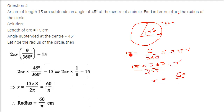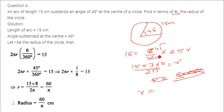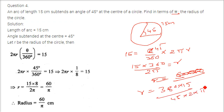Since we need to find r and theta is 45 degrees, we write r equal to 360 into 15 divided by 45 into 2 into pi. Simplifying: 360 by 45 gives 8, and 8 into 15 by 2 pi gives 60 by pi. So r equals 60 by pi. This is the answer.